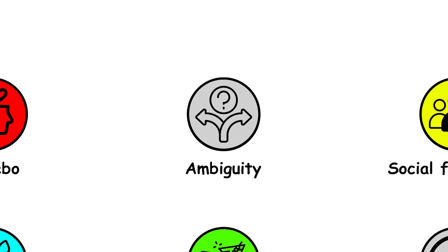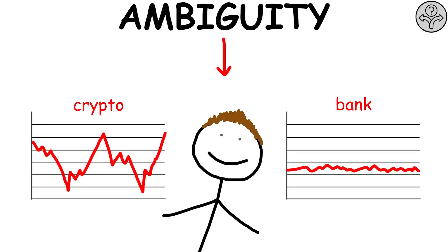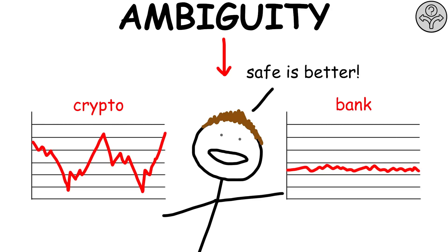Ambiguity effect. The ambiguity effect is when someone faced with a choice between two things prefers the one for which they already know the chances of success, avoiding the uncertain option.